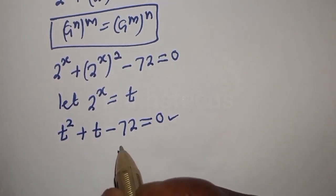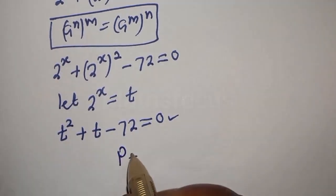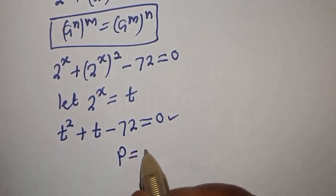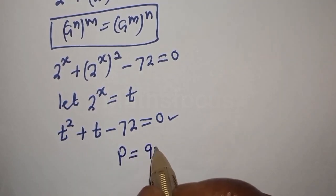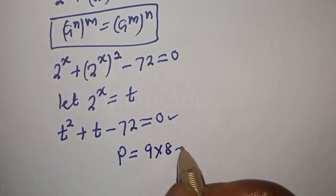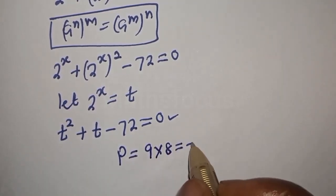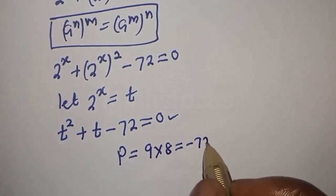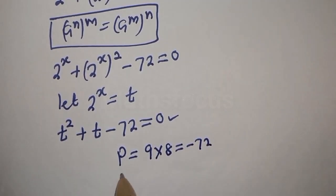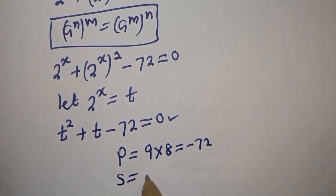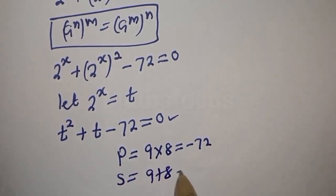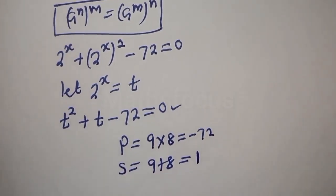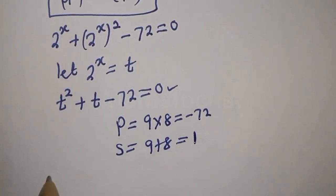Let's see: the product is equal to 9 multiplied by negative 8, which equals minus 72. The sum is equal to 9 plus negative 8, which equals 1.